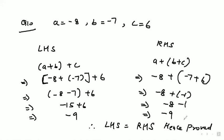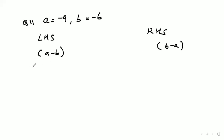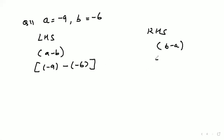Now come to question number 11. Question number 11 says: if a = -9, b = -6, show that a - b is not equal to b - a. We will assume a as -9 and b as -6. So LHS is a - b and RHS is b - a. LHS: a - b = -9 - (-6), and RHS: b - a = -6 - (-9).